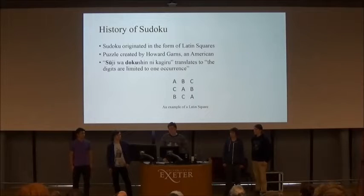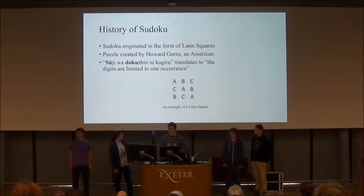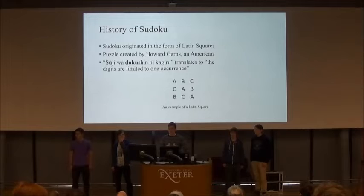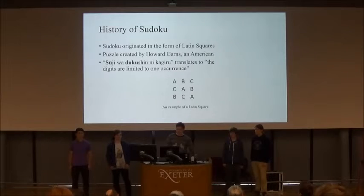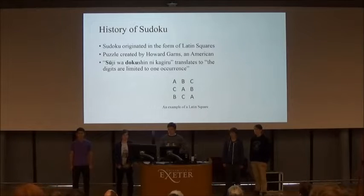Sudoku originated in the form of magic squares — a 3x3 grid where the basic rule was that the sum of the diagonals should equal the sum of the rows and columns. Fifty years later, a man named Howard Gans developed the idea, and he thought of it as nine regions of a 3x3 grid.